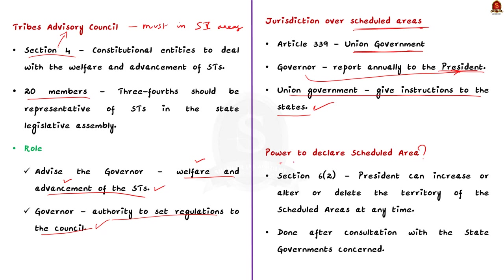Who is empowered to declare an area as a scheduled area under the Fifth Schedule? The answer is the President of India. Under Section 6, Clause 2 of Schedule 5, the President can increase the area of any scheduled area in a state after consultation with the governor of the state. The President may also, by order, specify the scheduled area in reference to a particular state or union territory, after consultation with the state governors concerned.